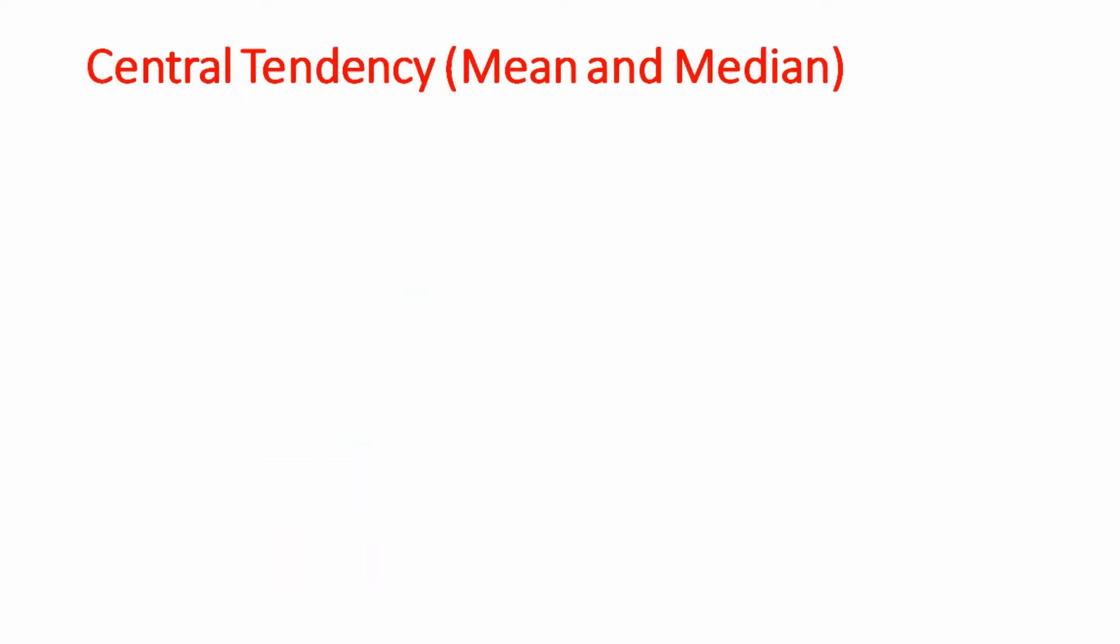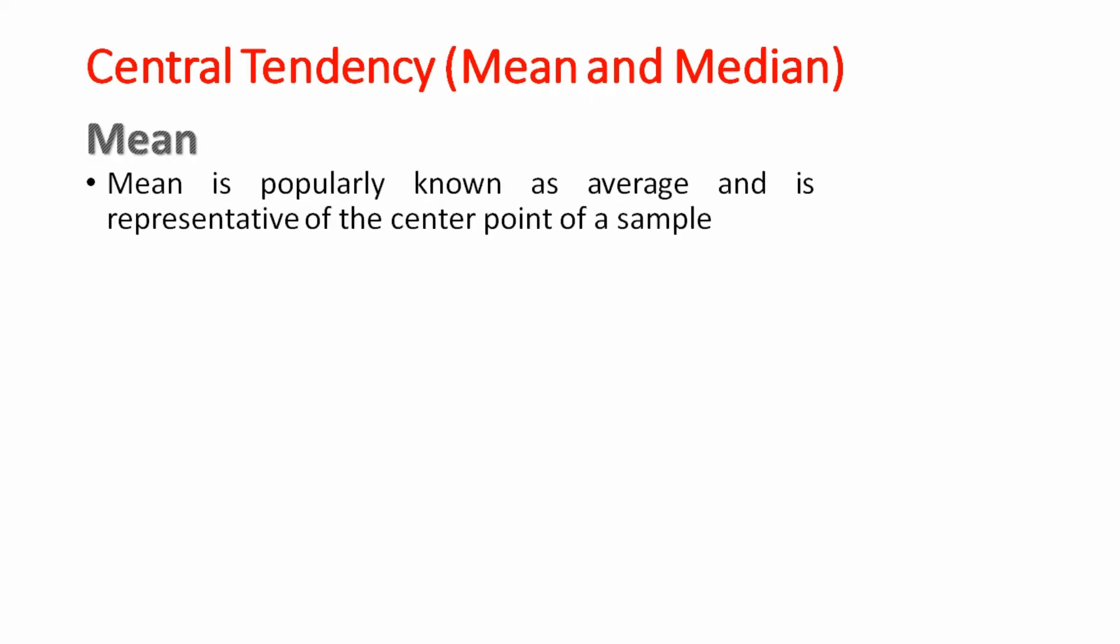The next thing that we will study about data is the central tendency, which is measured by mean and median. There is another way we can measure it which is mode. That will not be in the scope of this video. Mean is popularly known as average and is representative of the center point of a sample. The correct measure of central tendency when the data is continuous and normal.